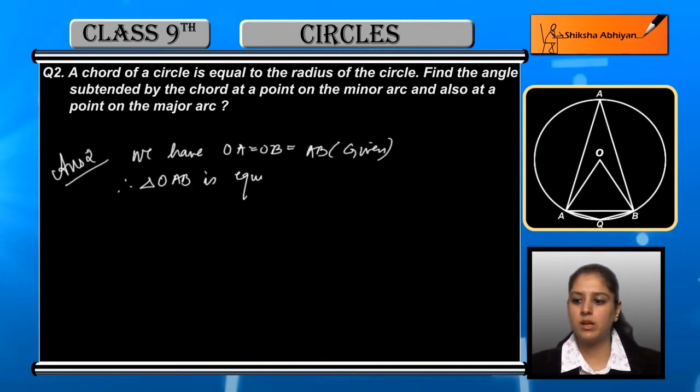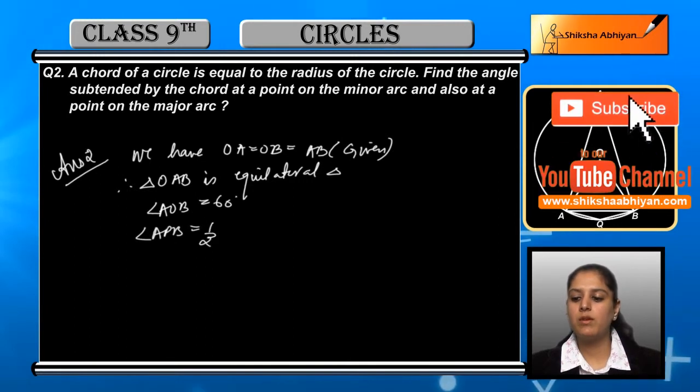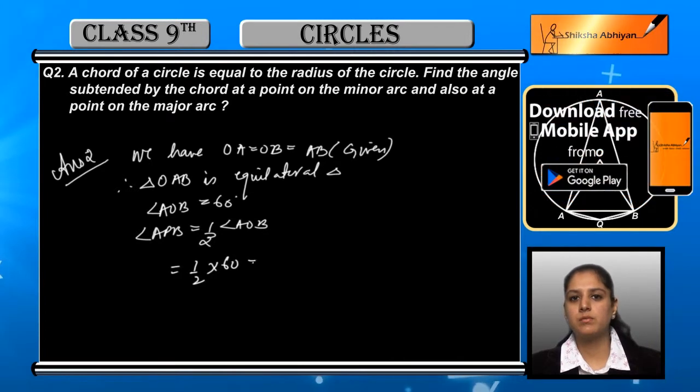Each angle is equal to 60 degrees. So angle AOB is equal to 60 degrees, and angle APB is equal to half of angle AOB, same reason, because the center and remaining circumference angles are forming.